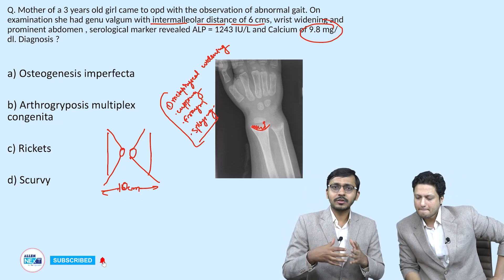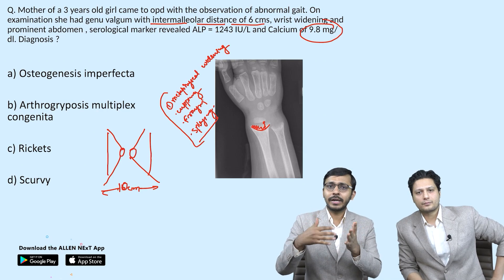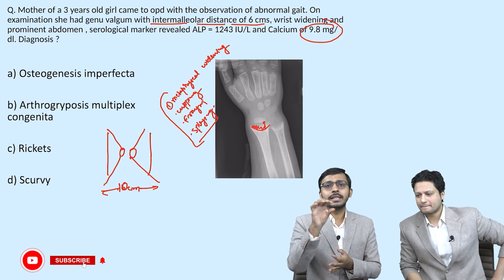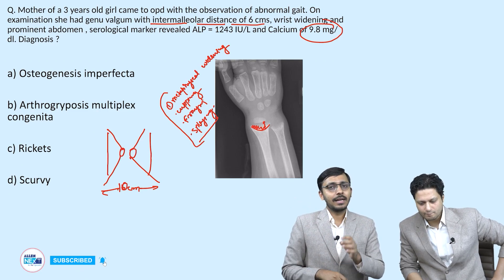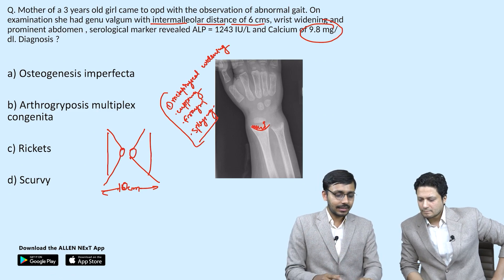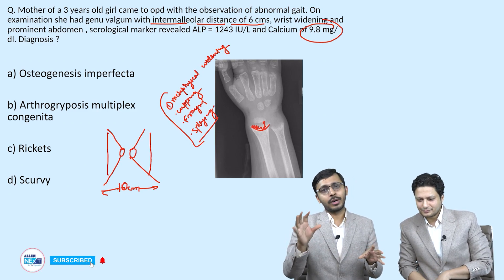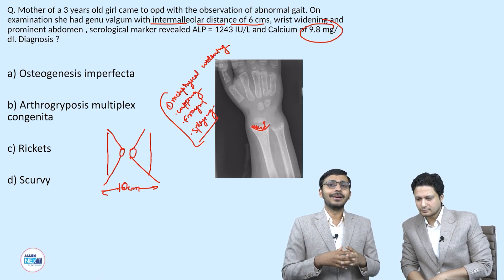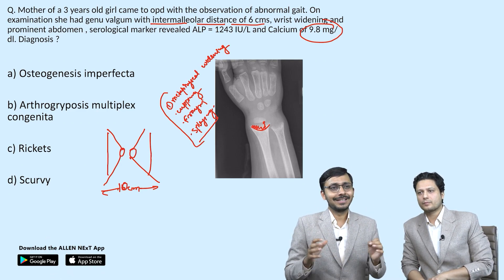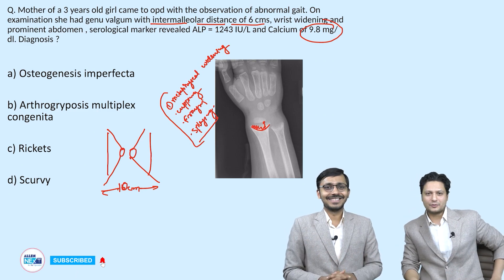In rickets, when treatment is initiated and mineralization of the metaphysis begins, a white line may appear at the metaphysis — this is during treatment, not in the untreated pathological state. That covers our integrated orthopedics and radiology session on these four important topics. Thank you all, and best of luck.